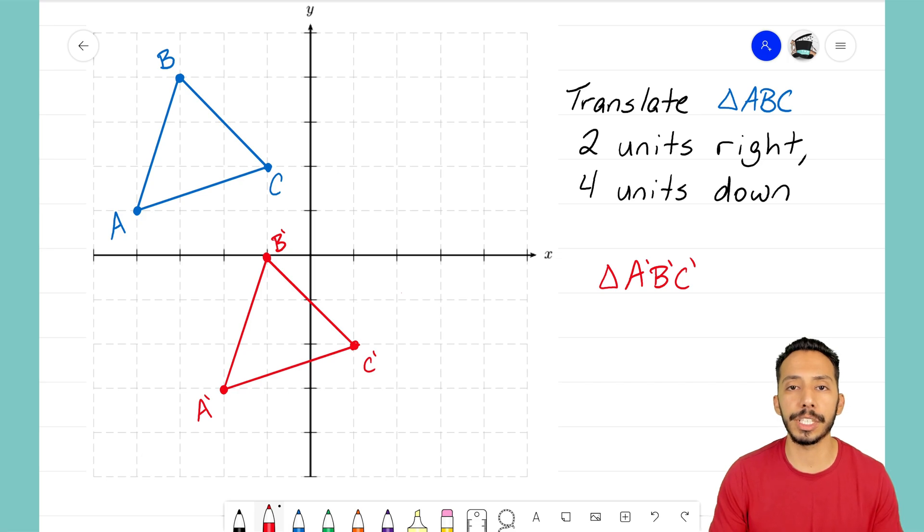That's a translation. Whatever you're translating, take each point or each vertex, move it the amount of units it says to do, connect the dots, and then you have your new shape. It's that Math Magician and I'll see you on the next video.